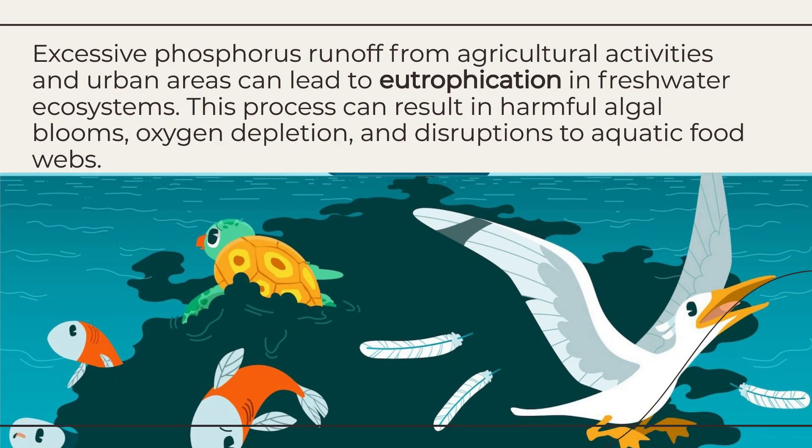Excessive phosphorus runoff from agricultural activities and urban areas can lead to eutrophication in freshwater ecosystems. This process can result in harmful algal blooms, oxygen depletion, and disruptions to aquatic food webs.